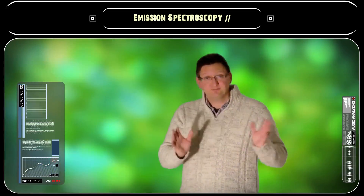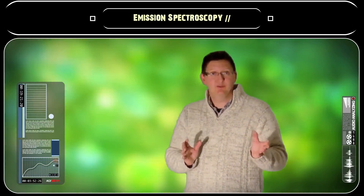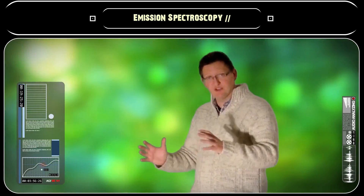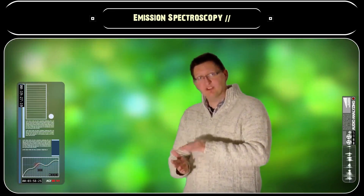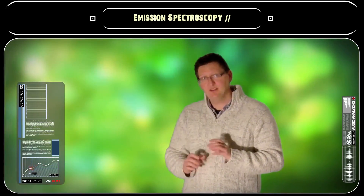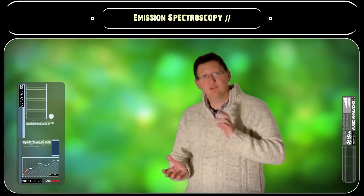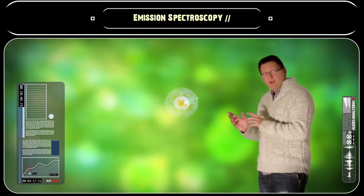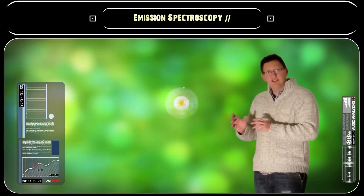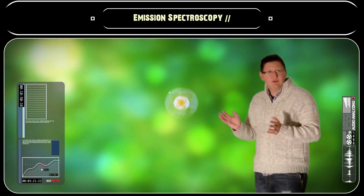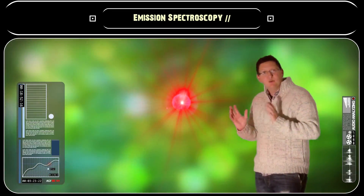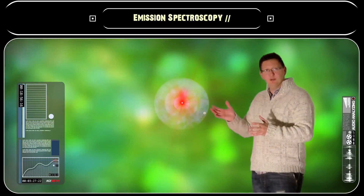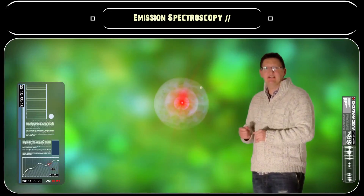For example, if red light is absorbed by an atom, then that atom would have to have its electron shells arranged such that some of them are separated by the exact same amount as the energy of the photon of the red light. So let's take a look here. If we imagine this electron in the lowest shell to be in its normal ground state, then when it absorbs the red light, the electron is able to move up to the next energy level like this.